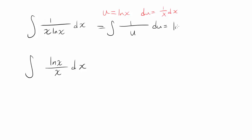So you have 1 over u du which is just natural log of absolute value of u. And in this case u is natural log of x and we want to end with plus C.